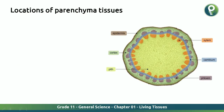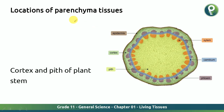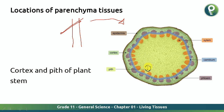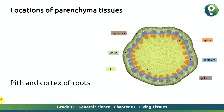Now let's understand the locations of parenchyma tissues. First, the cortex and the pit of the plant stem. When you take a plant and cross-cut it, you get a cross-section. In that cross-section, you can find parenchyma tissues in the pit and in the cortex — shown as light green and dark green, representing the soft parts. Also, the pit and cortex of the roots contain parenchyma tissues.